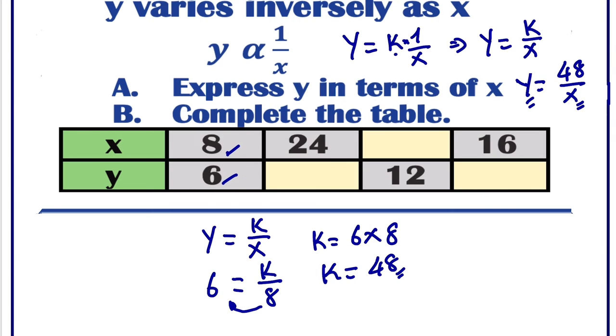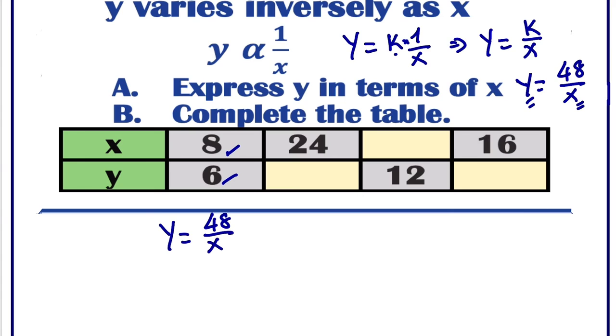The next thing to do is to complete the table. In order to complete this table, make sure that you write the formula because the formula is going to help you, y equals 48 over x.